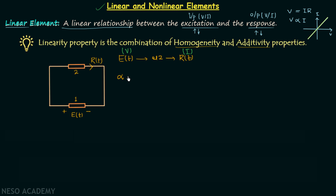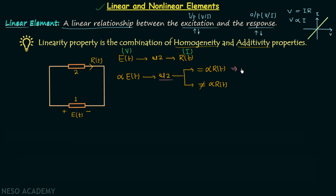Now we multiply alpha to our excitation and provide it to element 2. There are two possibilities: in the first possibility the response will be equal to alpha times RT, and in the second possibility the response will not be equal to alpha times RT. When the response equals alpha times RT, we say the element satisfies the law of homogeneity. When it does not, we say the element is not satisfying the law of homogeneity.